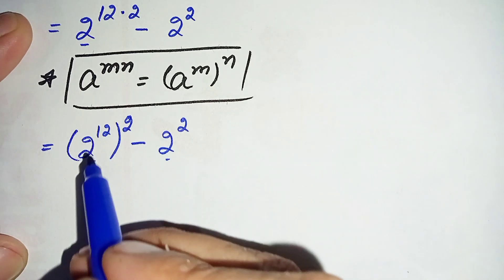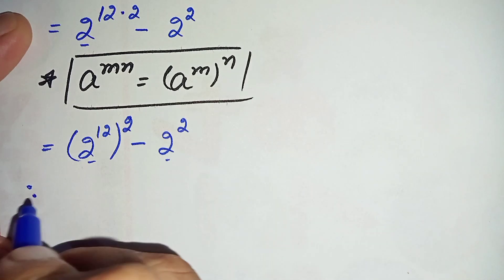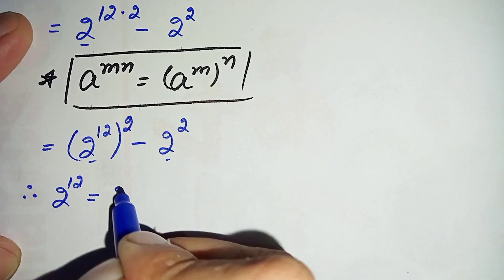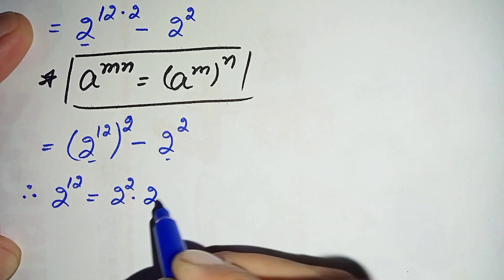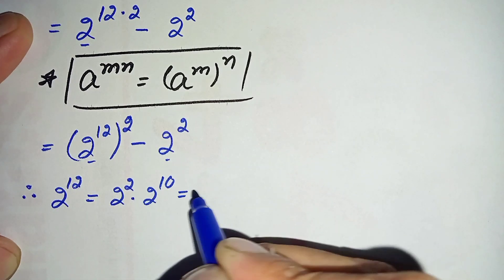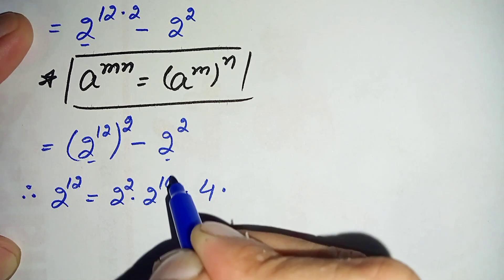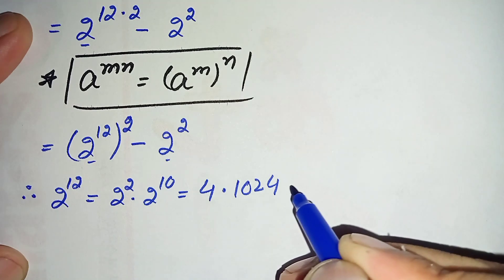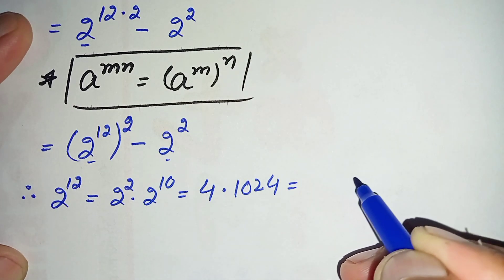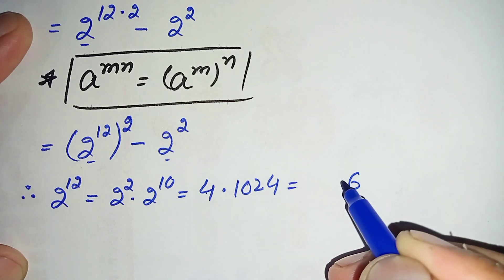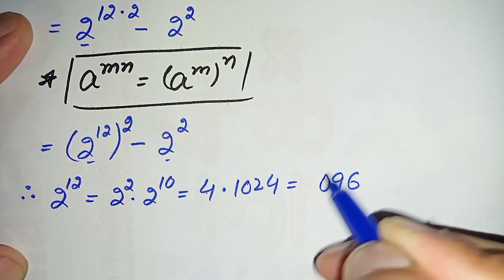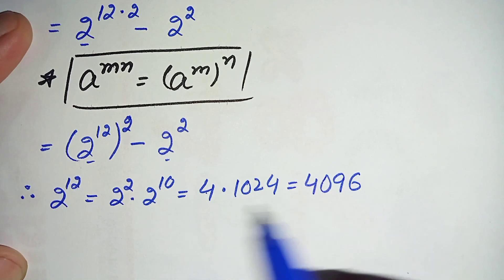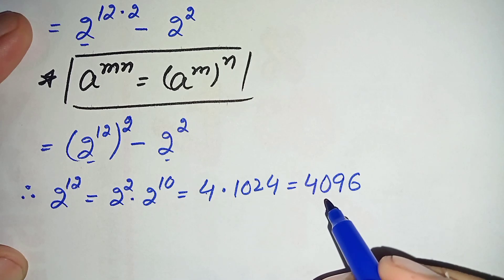First I will find the value of 2 raised to power 12. We write 2 raised to power 12 as 2 raised to power 2 times 2 raised to power 10. Now 2 raised to power 2 is 4 and 2 raised to power 10 is the famous number 1024. Multiplying 4 times 1024 gives us 4096. So the value of 2 raised to power 12 is 4096.